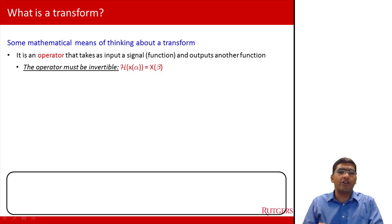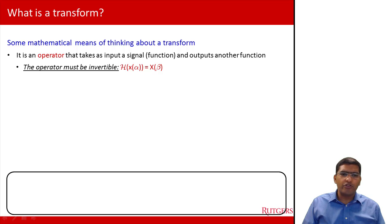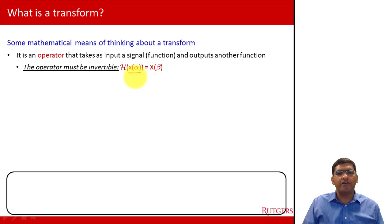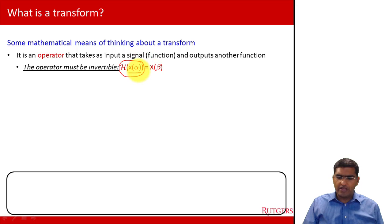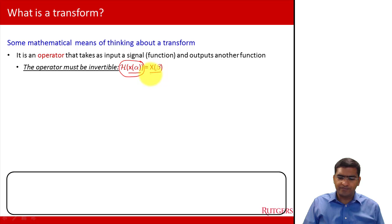What makes an operator a transform versus something else? The requirement is that the operator must be invertible. For example, you could have x of alpha as your input, where alpha is any variable — it could be time, or space in the case of images, or something else. You input your signal into this operator, which we call a transform, and the outcome is another function x of beta, where alpha has been changed into another variable beta.